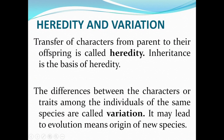The transfer of characters from parent to offspring is called heredity, and inheritance is the base of heredity. When characters are transferred from parent to offspring, a small difference arises — these differences account for what is called variation. Variation is the raw material of evolution.